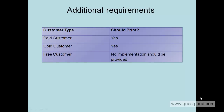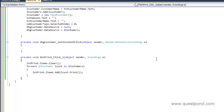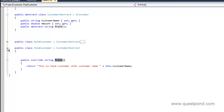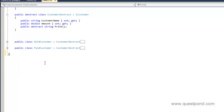Now one fine day you get some additional requirements. The project currently supports two customer types — paid and gold — and they both implement the print functionality. Now a new requirement comes in: add a new customer type called free customer, and this free customer should not be allowed to print. In other words, nobody should be able to invoke the print function on the free customer class. You already have the class structure in place, so you think it should be easy.